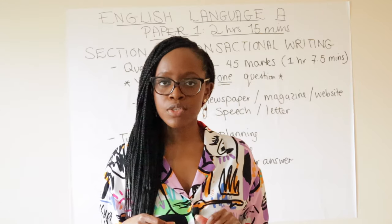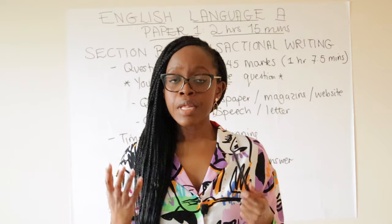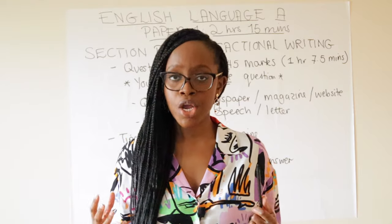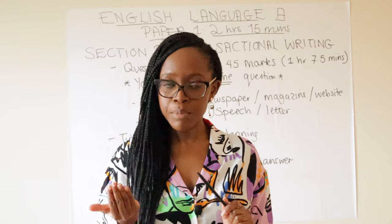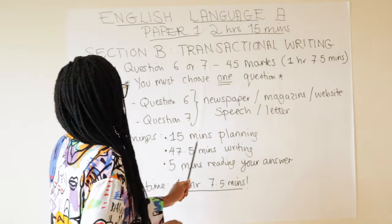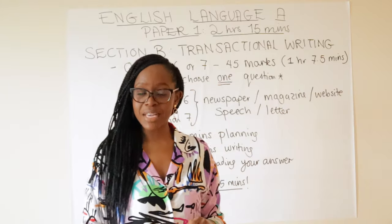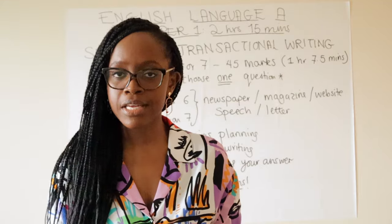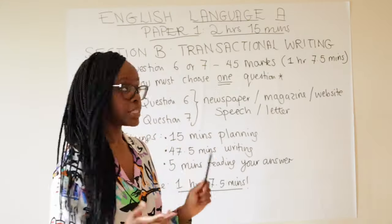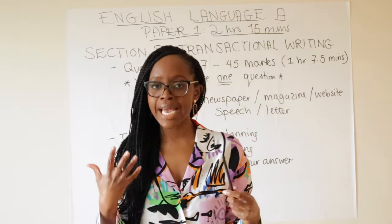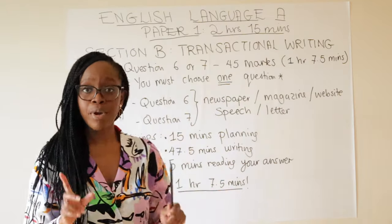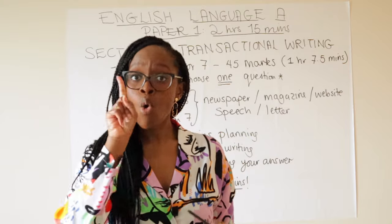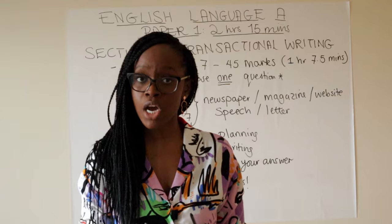Now let's look at Section B. This is a really important section because it counts for half of the overall paper's marks. With two hours and 15 minutes for the entire paper, allocate half that time to Section B. My advice is to spend one hour and 7.5 minutes — that's one hour, seven minutes, and 30 seconds — in total on Section B.